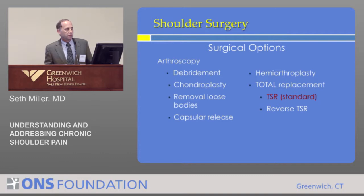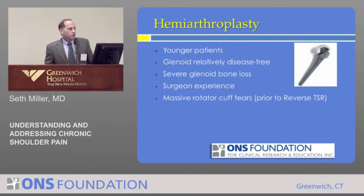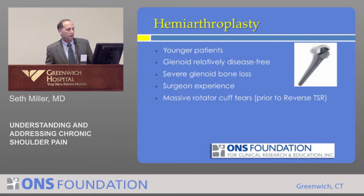When arthritis becomes severe, we move into the replacement options. Within replacements, we have hemiarthroplasty, where we just replace the ball, which we don't do as often anymore, and total shoulder replacements in two types. We do hemiarthroplasty occasionally for younger patients where we don't want to put in a plastic socket, or when the socket is badly worn with not enough bone. Before the era of reverse replacement, we would do a hemi for patients with a bad rotator cuff tear, but now we have the reverse replacement.